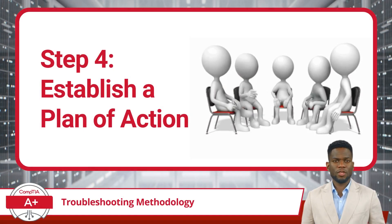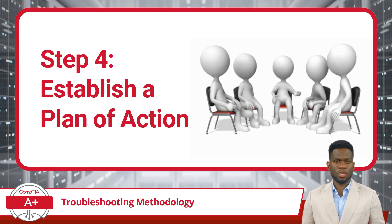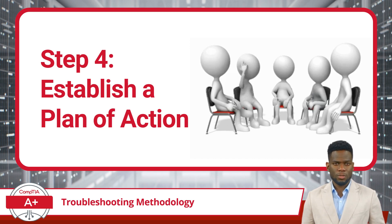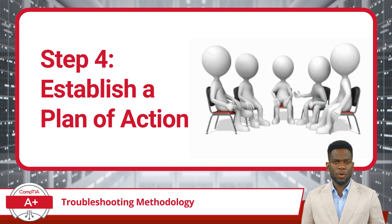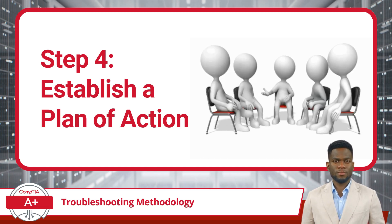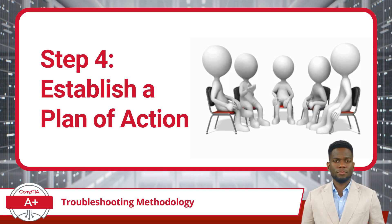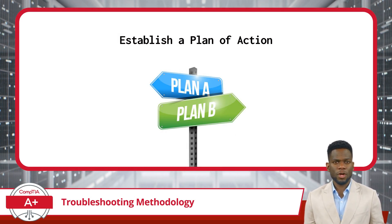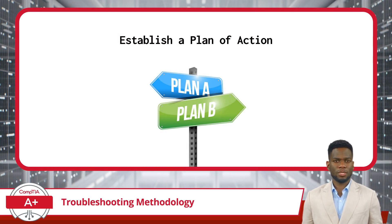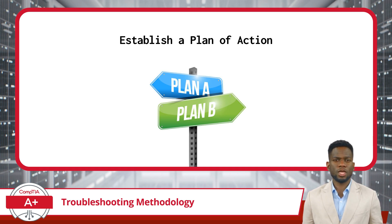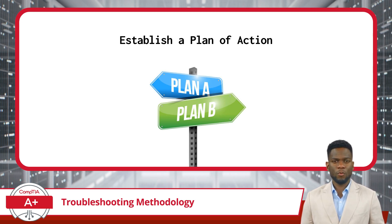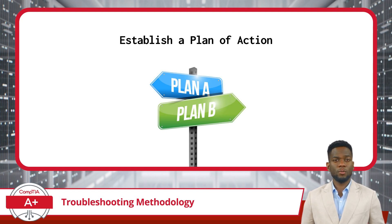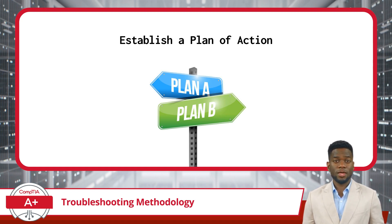After determining the root cause, move on to Step 4: establish a plan of action to resolve the problem and implement the solution. Within your plan you will likely come to one of three solution measures — Repair, Replace, or Ignore. The choice between Repair and Replace usually comes down to cost, as repairing is generally cheaper but not always. Start by deciding which measure to take, and the rest of your plan will fall in line after that.